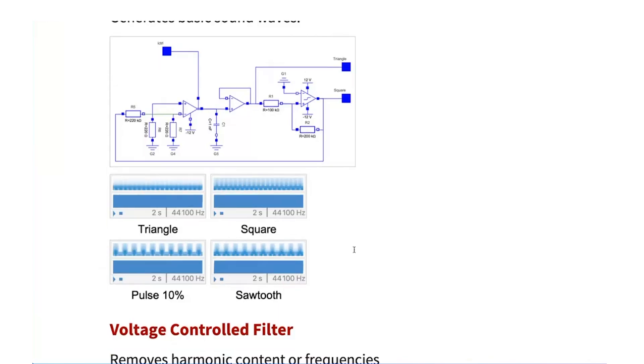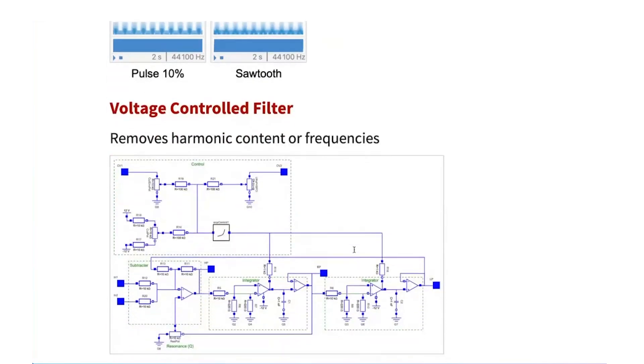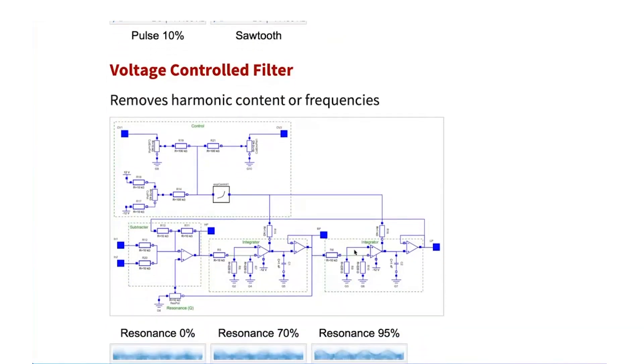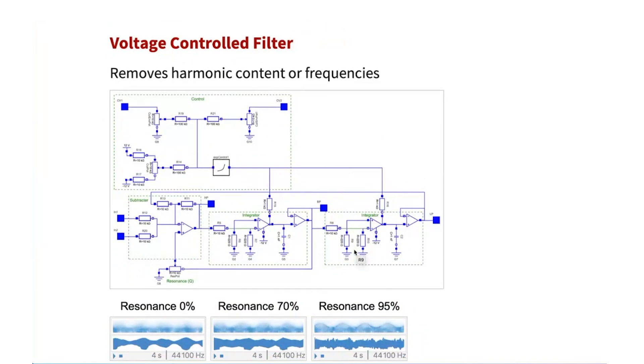And the next thing that we can create, once we have a sound generator, we need a way of shaping the sound. For that we can use a voltage control filter. And this is the circuit that we analyze, which consists of different subsystems. We have two integrators, a subtractor and also a kind of mixer to control the signals.